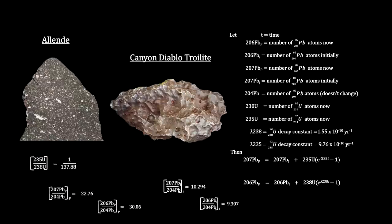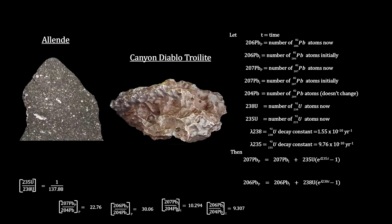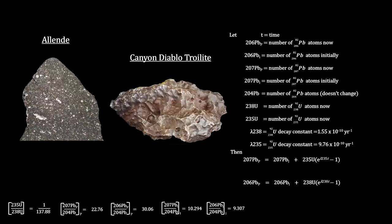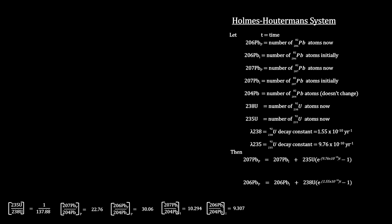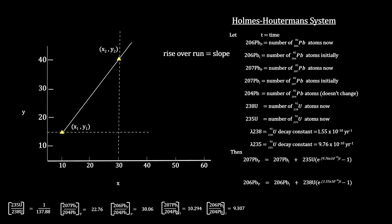But that won't work for meteorites. They don't have any zircon crystals. So, by the mid-1940s, Arthur Holmes and others had extended the uranium-lead dating method into a lead-lead method called the Holmes-Houtermans system that took into account lead-204, the natural non-radiogenic lead isotope. This is the system that tells us the age of meteorites, the Earth, planets, and the entire solar system. So, we'll take a minute to show how it works.